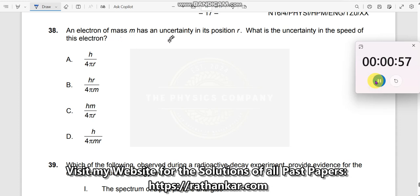Question number 38. An electron of mass m has an uncertainty in its position r. What is the uncertainty in the speed of this electron?